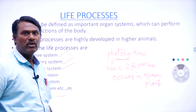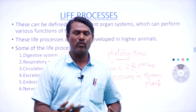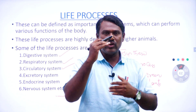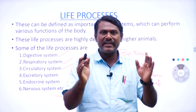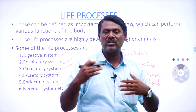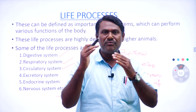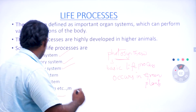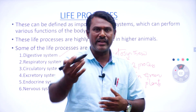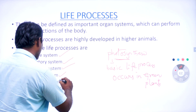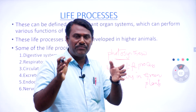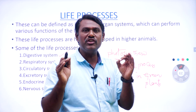Next is the circulatory system, also called the transport system. We have different types of fluids in our body — one example is blood. Within the circulatory system we have blood, heart, and other components. The heart is a major organ of the blood circulatory system, useful for transportation of various components through blood vessels. Next is the excretory system, defined as the process of removal of undigested waste from the body. Next is the endocrine system, specially useful for the secretion of hormones, which are important for control and coordination in human beings.